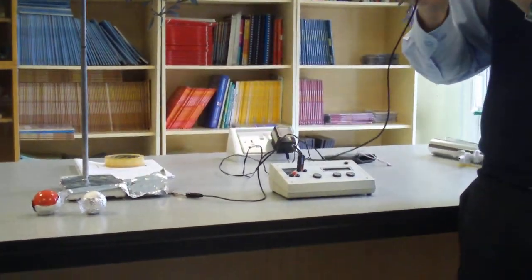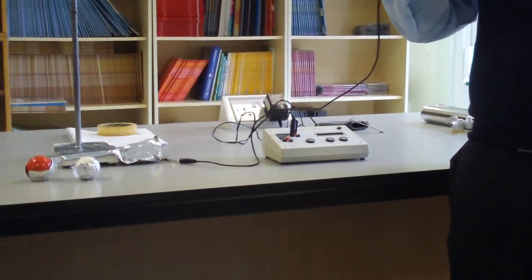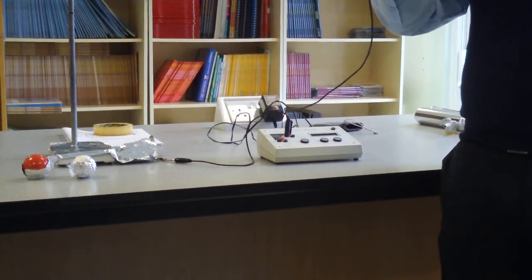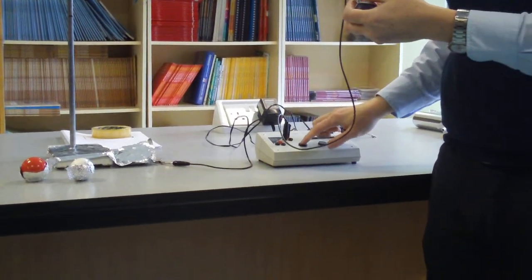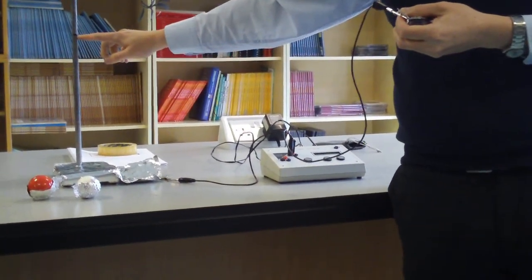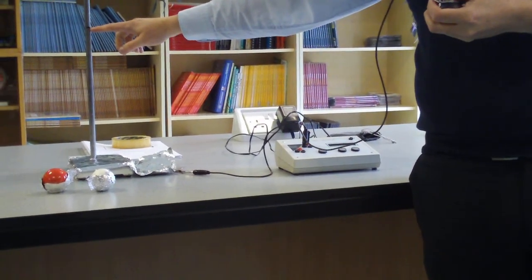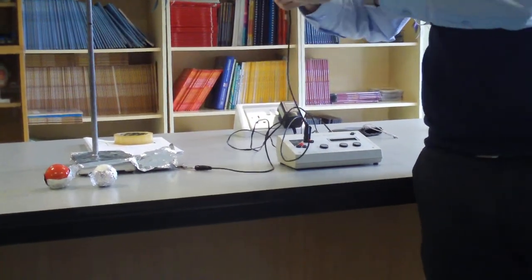So we'll start off with the bouncy ball first and see what kind of results we get. So we're going to get the time of impact here for each of these three individual types of balls. I'm going to drop it from this little marker here that I've handily made, just to make it a fair experiment, so that we're doing it from the same height each time.